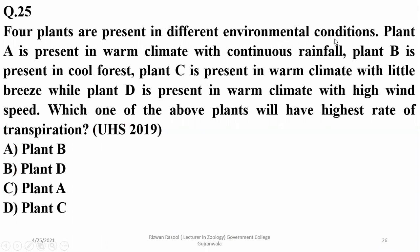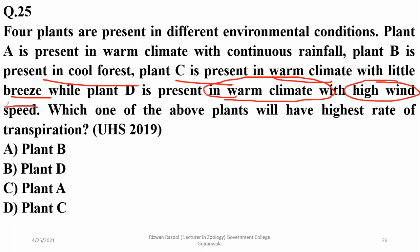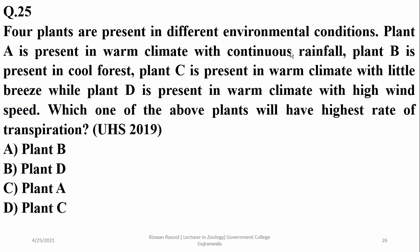Question twenty-five: plants are present in different environmental conditions — Plant A in warm climate with continuous rainfall, Plant B in cool forest, Plant C in warm climate with little rain, and Plant D in warm climate with high wind speed. Warm climate combined with high wind speed both increase the rate of transpiration, so Plant D has the highest rate of transpiration.